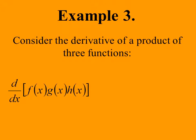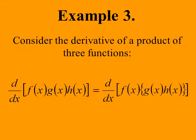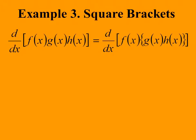We will now use the square bracket notation to find a pattern in the derivative of the product of more than two functions. Consider the product of three functions: f(x), g(x), and h(x). Since the Product Rule allows us to differentiate a pair of functions, we pair together g and h and treat them initially as a single function. Applying the Product Rule to f(x) and g(x)·h(x) gives the form of the derivative. Since g(x)·h(x) is itself a product, we will have to apply the Product Rule within a Product Rule.